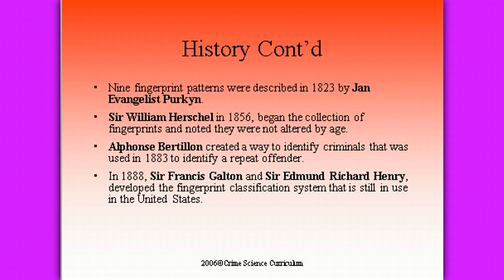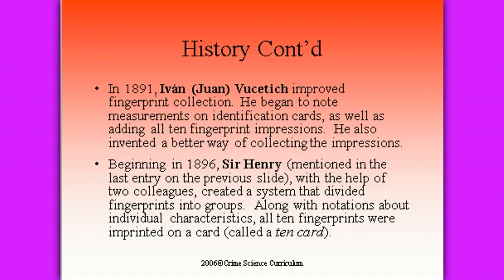Five years later, Galton and Sir Edmund Richard Henry developed the first fingerprint classification system that is still used in the United States today. In 1891, Ivan Vucetic improved fingerprint collection — he began noting measurements on identification cards, adding all ten fingerprint impressions, and also invented a better way of collecting the impressions.